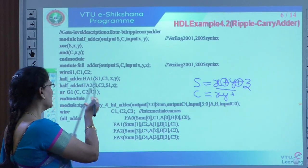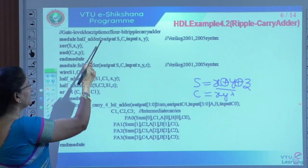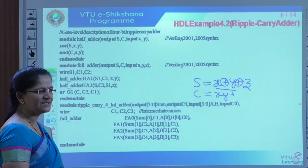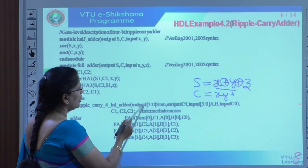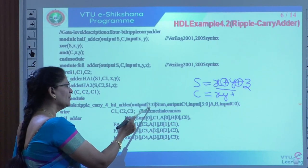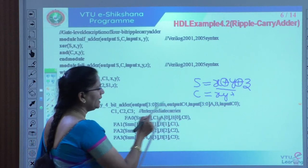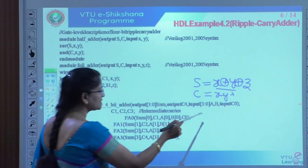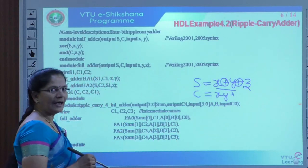Now we have written half adder and full adder. To make the 4-bit vector representation, we write the module as 'ripple_carry.' The output is represented as sum with 4 bits — 3 to 0. The carry output is C4. The inputs are A and B — 3 to 0 — and C, the carry input. Full adder has three inputs: A, B, and carry. We need to define the intermediate wire connections C1, C2, C3.